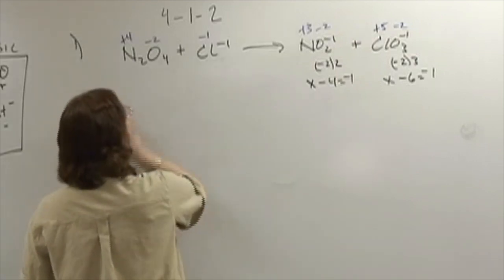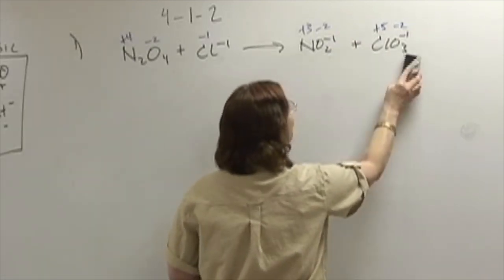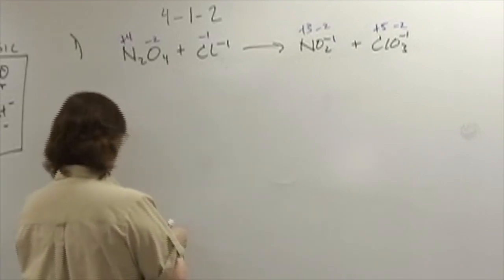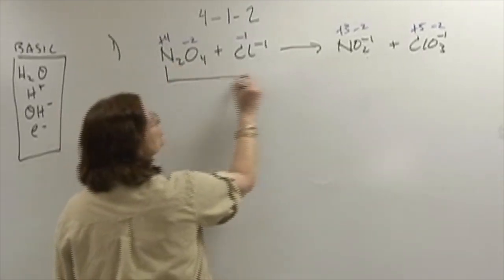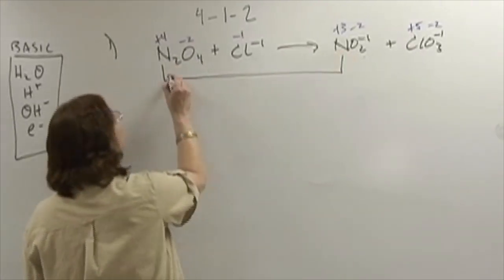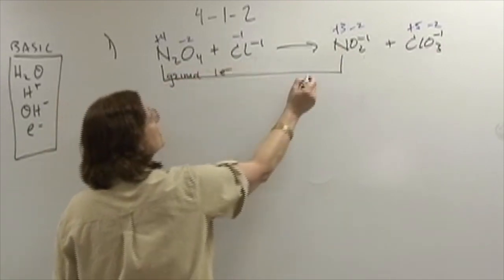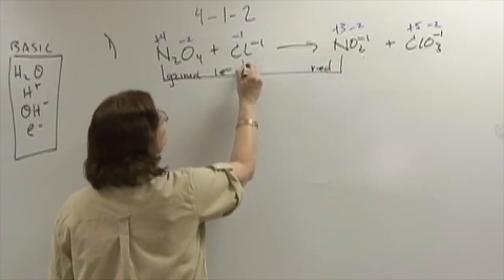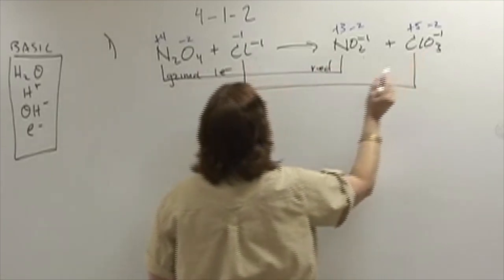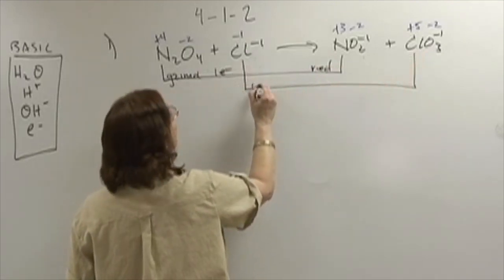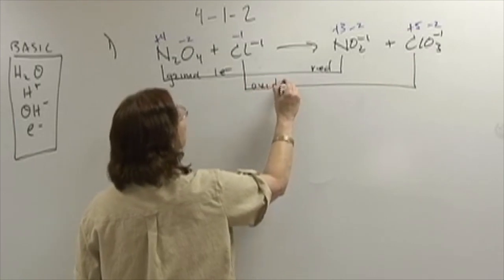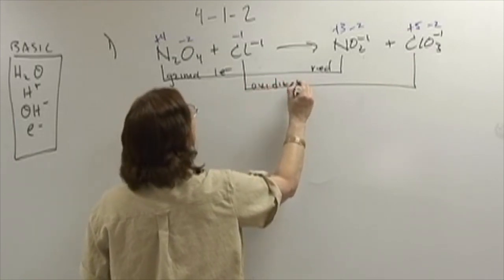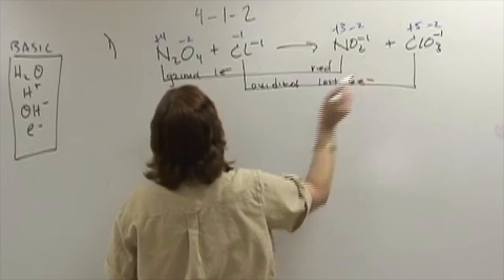Now, what happened to nitrogen is, for a single atom, it went from +4 to +3. Therefore, it gained one electron and was reduced. Chlorine went from -1 to +5, and therefore it was oxidized and lost 6 electrons.